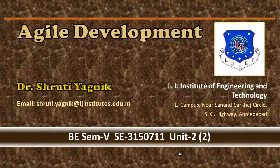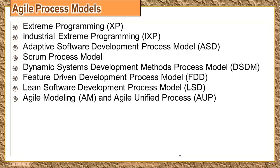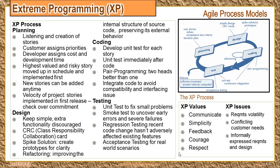Today we will proceed with Agile Process Models. These are the various Agile Process Models. We will be starting with Extreme Programming, XP, first. The name is Extreme because the approach of software development is forwarding the best practices to an extreme level. All the good practices followed in this process are taken to an extreme level, hence the name Extreme Programming.